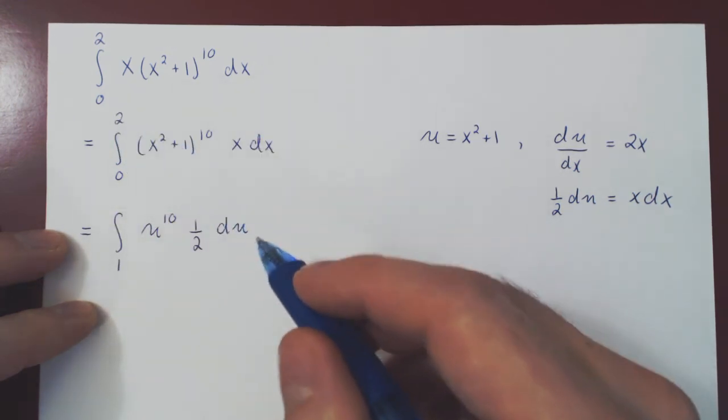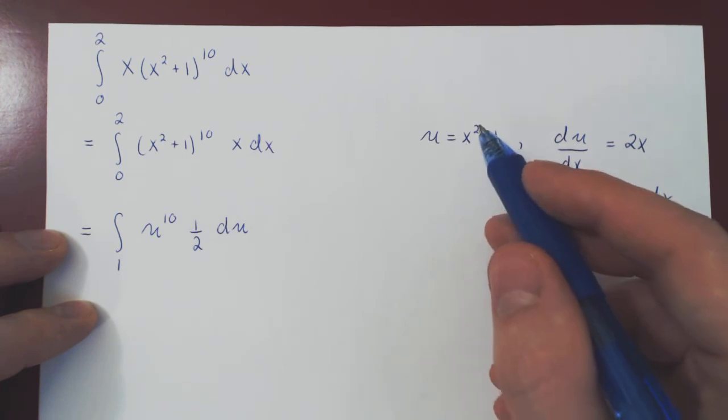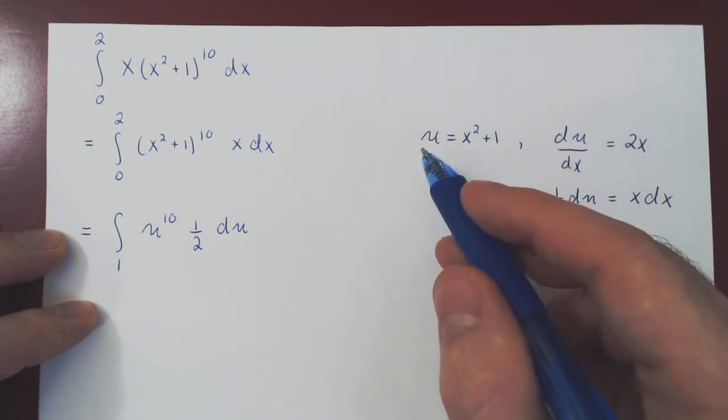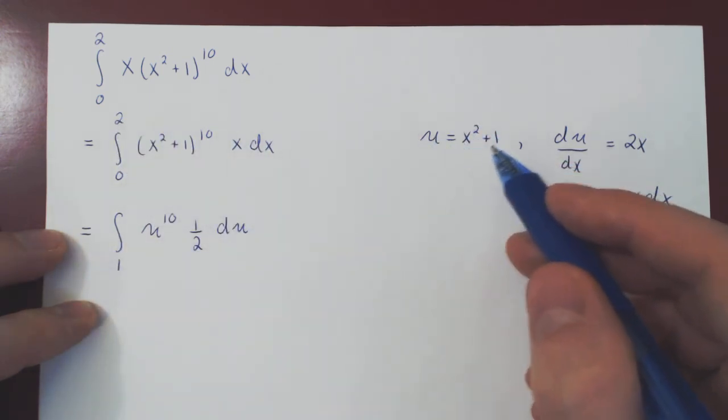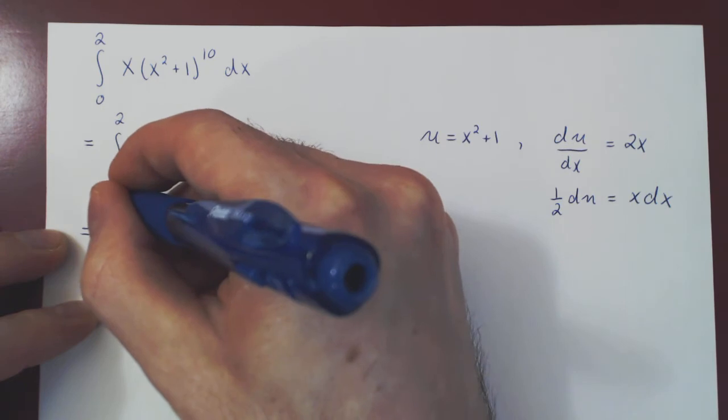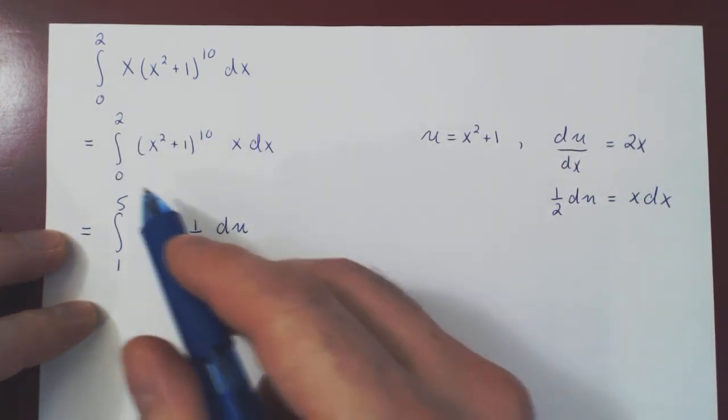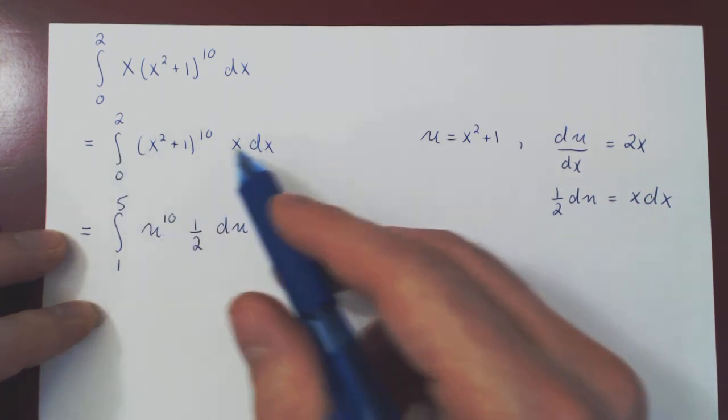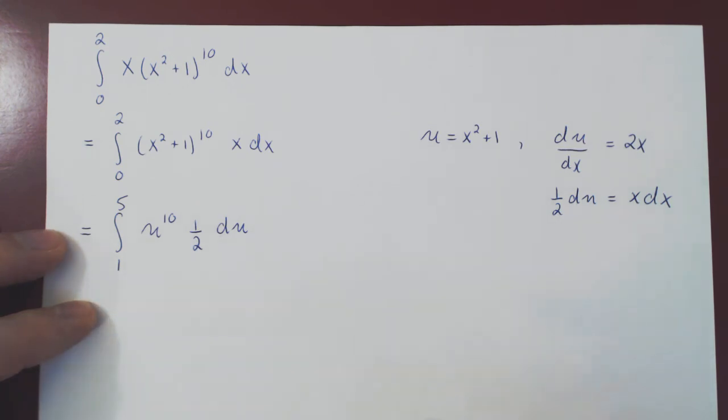If x is 2, what is u equal to? If we plug in x equals 2 here, we get 2 squared 4 plus 1, 5. And so when x is 2, u is 5. And now we have the new bounds of integration, and we're good to go. We can leave the old variable x behind and integrate with respect to u, as we have the new bounds of integration.